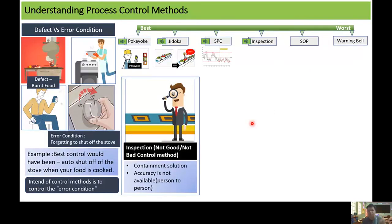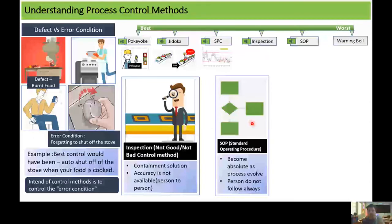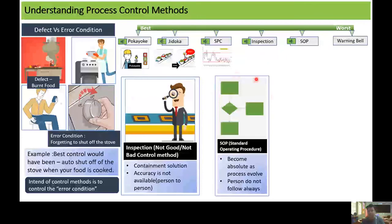The second worst control method is Standard Operating Procedure. Standard Operating Procedure is a set of rules or set of processes which are predefined and which are given to an operator to study and read before performing different operations. This is not considered as one of the best control methods because it depends on the human behavior, how they read them before performing a particular operation.